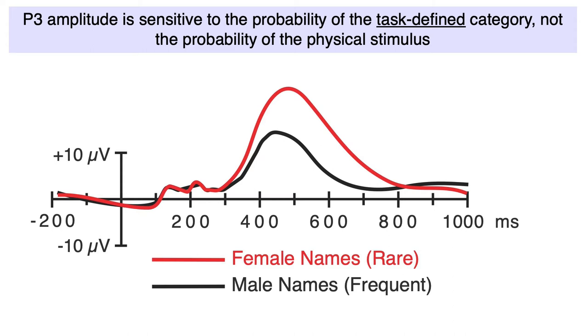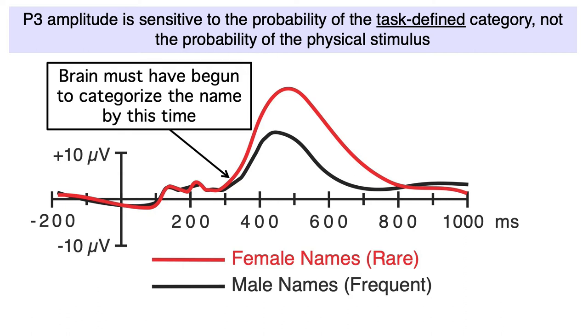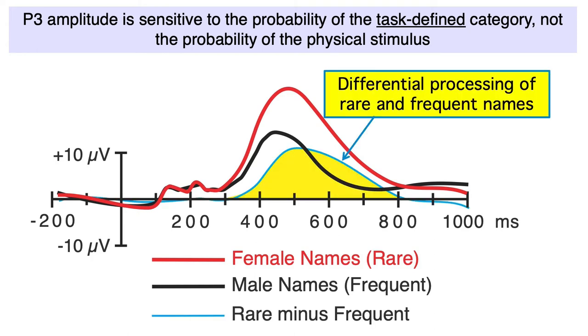You can see that the rare female names generated a larger P3 than the frequent male names, even though any individual male or female name was presented only once. Now let's consider a logical implication of this study that wasn't obvious back in the 1970s. Because P3 amplitude depends on the probability of the task-defined category, the ERPs can't differ between the oddballs and the standards until the brain has begun to determine which task-defined category a given stimulus belongs to. If the brain hasn't determined that Nancy belongs to the rare category and Michael belongs to the frequent category, how could Nancy elicit a larger P3 than Michael? So if the rare and frequent stimulus categories elicit different amplitudes by 300 milliseconds, we can logically conclude that the brain has begun to classify the stimuli into the rare and frequent categories by 300 milliseconds. If we make a rare minus frequent difference wave, we can restate this by saying that the brain must have begun to categorize the stimuli by the time the difference wave deviates from zero, which is right around 300 milliseconds in these artificial data.